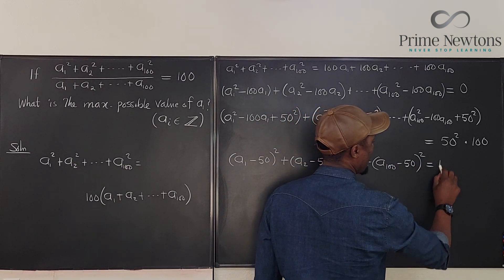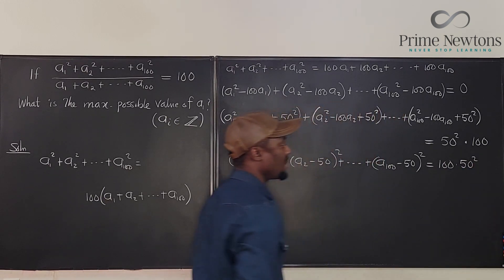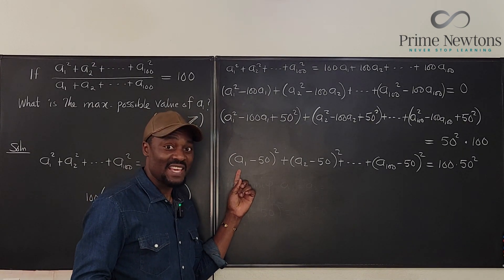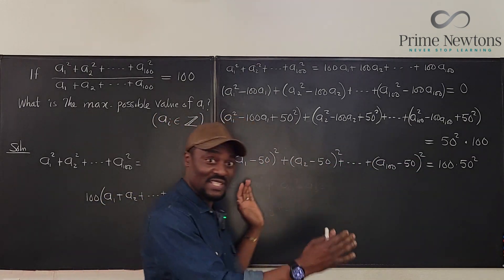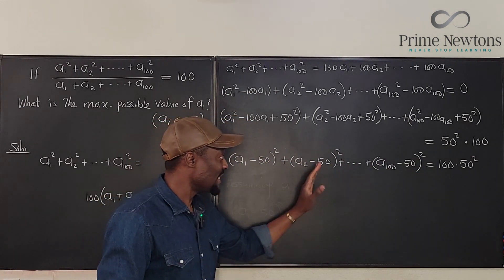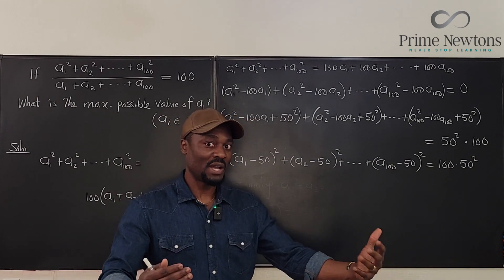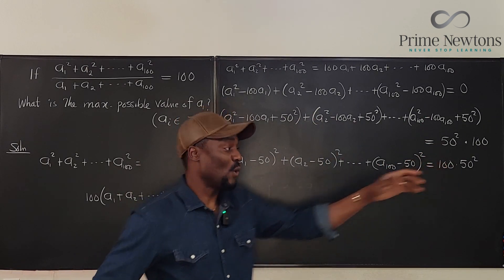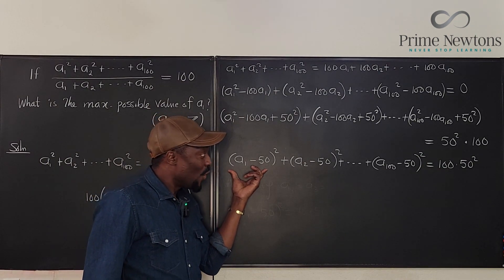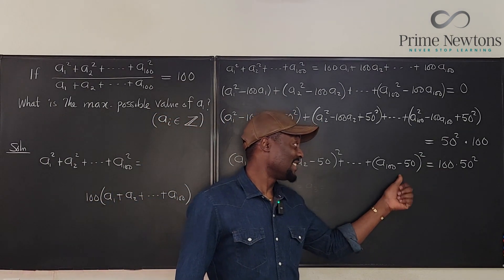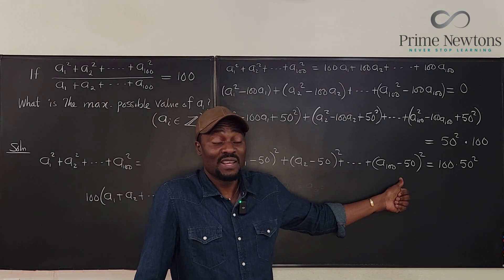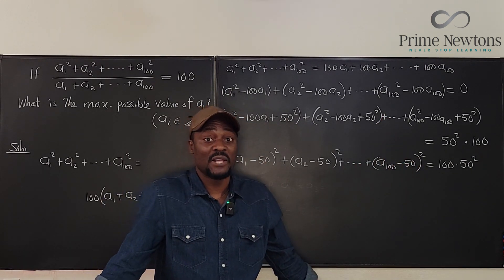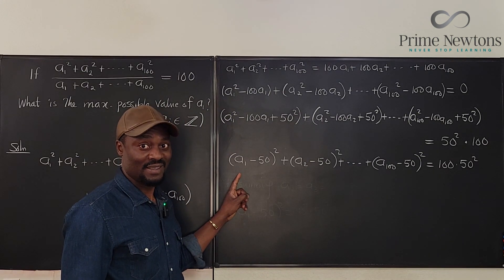And that gives us 100 times 50 squared. So at this point, in order to obtain the maximum value of a, we have to minimize everything else contributing to this addition. Remember, we know that every single term is positive. So if you add a bunch of positive terms, and then you zero them out, then the very first one has to be super big to equal the other side. So in order to obtain the maximum value here, we have to minimize this, and minimizing this, this can never be anything other than zero. That's the minimum it can be. This can never be negative.